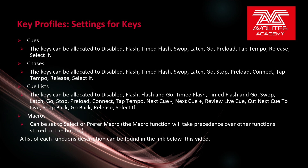If the item is a cue list, the keys can be allocated to: disabled, flash, flash and go, timed flash, timed flash and go, swap, latch, go, stop, preload, connect, tap tempo, next cue minus, next cue plus, review, live cue, cut next cue to live, snap back, go back, release, and select if. Flash and go will flash the playback up, and when released will step to the next cue. Timed flash and go uses the fade in and fade out times, then steps to the next cue on release. Next cue minus and next cue plus move up and down the cues in the cue list, waiting for you to hit go. Review live cue replays the current cue using its fade times. Cut next cue to live fires the next cue ignoring its times. Snap back snaps the cue list back to the previous cue without times. Go back moves the cue list to the previous cue using fade times.